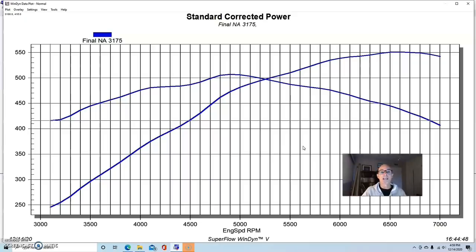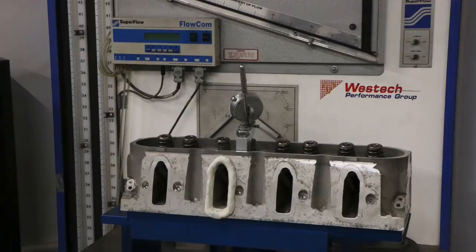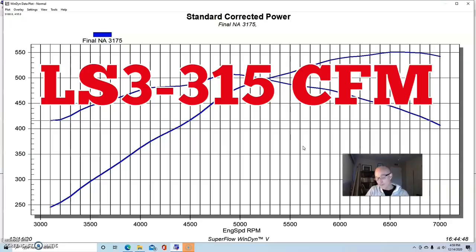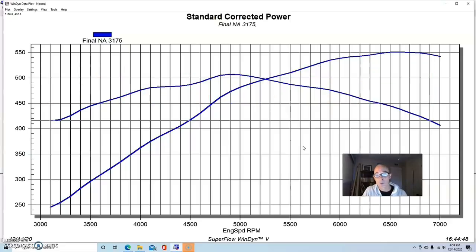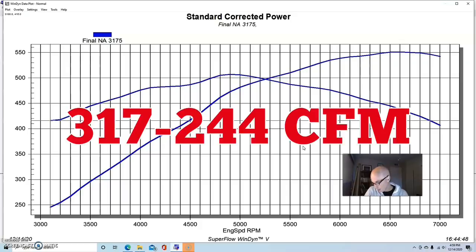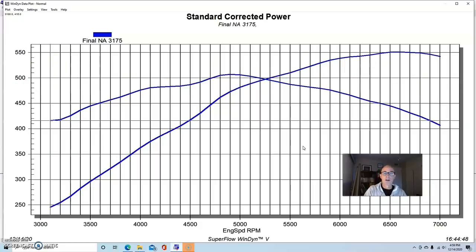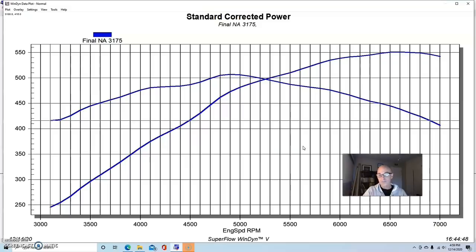What we have is a big change in airflow. In terms of peak airflow, we have about 315 cfm offered by the rec port head, just bone stock. All we did was change the valve springs on them. And then we have about 244 cfm for the 317 head. So we have about 70 cc's per runner in favor of the LS3 rec port heads.